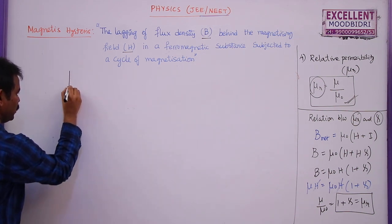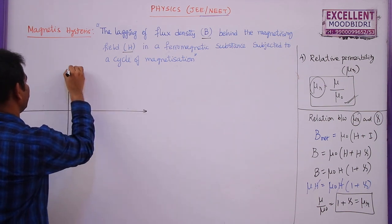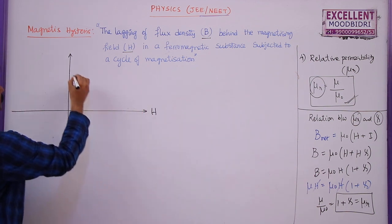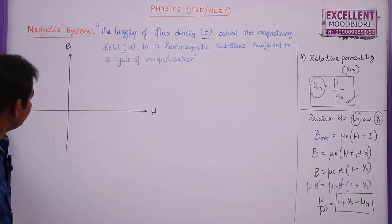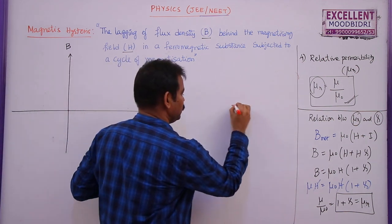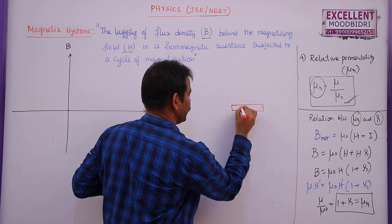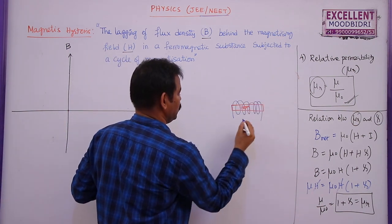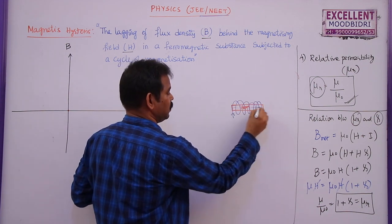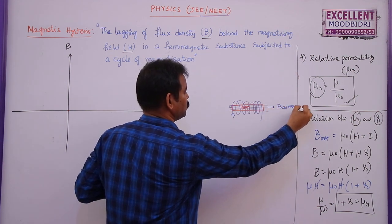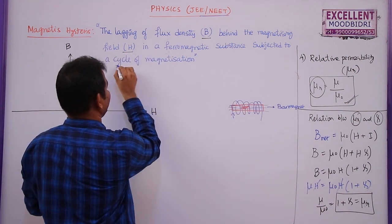To represent hysteresis on a graph, magnetizing field H is taken along the x-axis and flux density B along the y-axis. If we take a ferromagnetic substance like iron inside a current-carrying solenoid, as current passes through, the field lines pass through the iron and iron behaves as a bar magnet. This is called a cycle of magnetization.